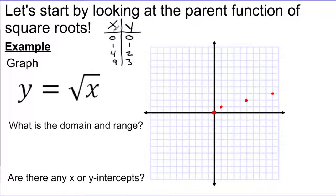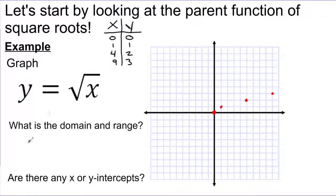We have to think about whether there's anything else we could plug in. We really only plugged in positive numbers — is there anything else? Here's the big issue: we can't plug in any negative numbers at all. Even nice ones like negative 1 or negative 4 come out with answers involving complex numbers — i starts getting involved — and we can't put those on this coordinate plane.